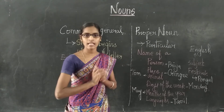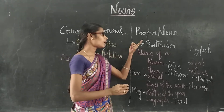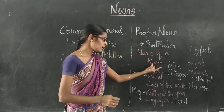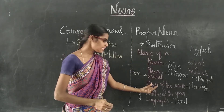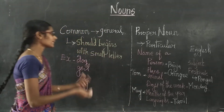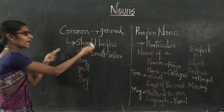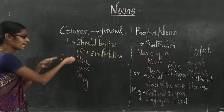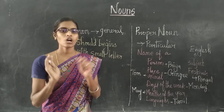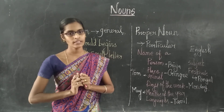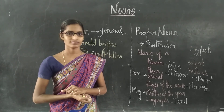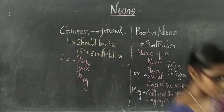Notice that all the Proper Noun examples begin with a capital letter. So Proper Noun begins with a capital letter — it is the particular name of a person, place, animal, days, months, languages, subjects, and festivals. Common Noun denotes general names and begins with a small letter — examples: dog, girl, boy. That is the difference between Common and Proper Noun. Thank you so much. In the next class we will discuss about the next topic. Thank you.